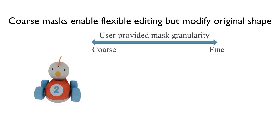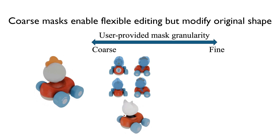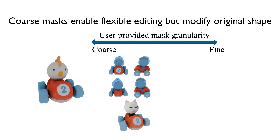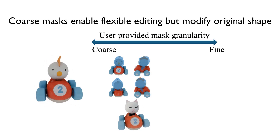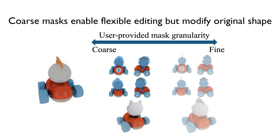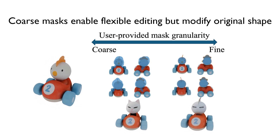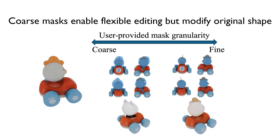For example, when the user brushes a quick and coarse mask over the region to edit, we can flexibly add features of a cat, such as the ears. But a naive approach would also modify the neighboring regions of the shape. The fine-grained mask does not enable editing to produce cat ears, since they would be outside of the mask.